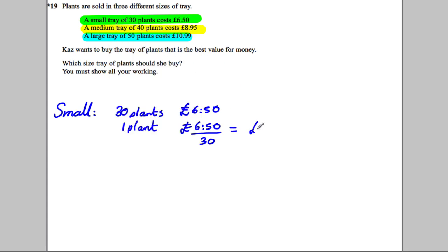So that's 0.216 recurring pounds. Then what we could do is the medium, and we know that 40 plants cost £8.95. So clearly, one plant would be £8.95 divided by 40.